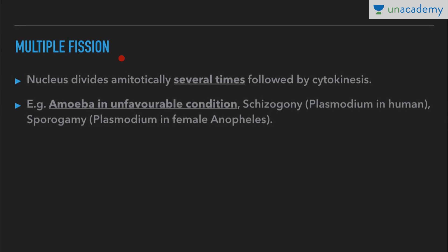Next we have multiple fission. In binary fission there is a single division producing two daughter cells, but in multiple fission multiple offsprings are produced. The nucleus divides amitotically several times, followed by cytokinesis, producing several offspring. An important example is amoeba under unfavorable conditions. In favorable conditions, amoeba divides by binary fission of the simple or irregular type, but in unfavorable conditions it divides by multiple fission.